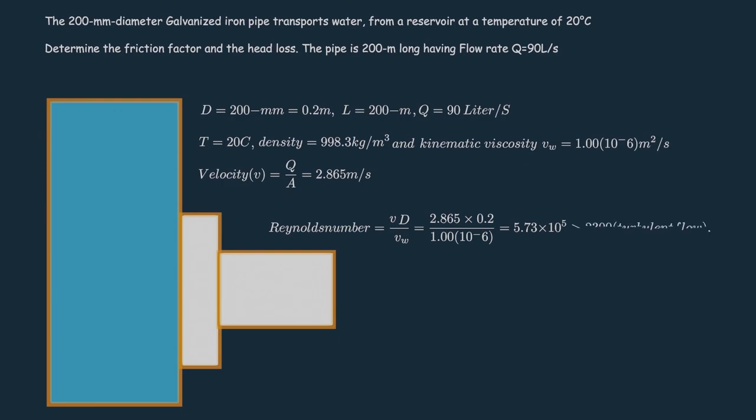The Reynolds number for this flow will be greater than 2300, which means flow is turbulent and at the perfect time to use our Moody chart.